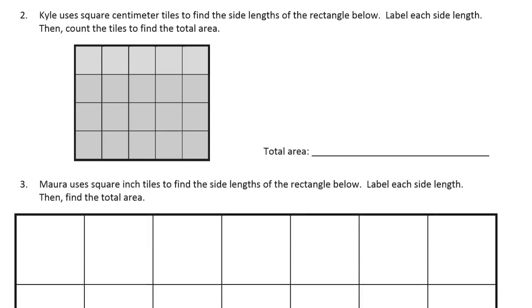Kyle uses square centimeter tiles to find the side lengths of the rectangle below. Label each side length, then count the tiles to find the total area. So this is one, two, three, four, four centimeters.